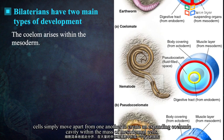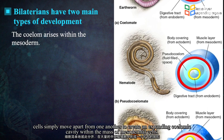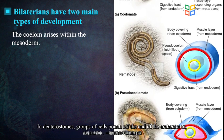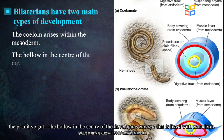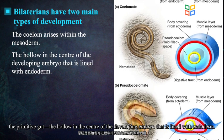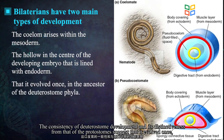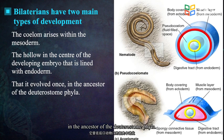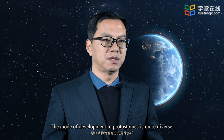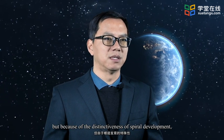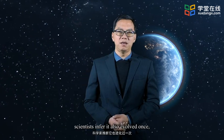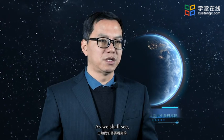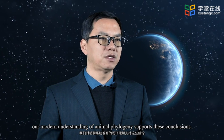In protostomes, cells simply move apart from one another to create an expanding coelom cavity within the mass of mesodermal cells. In deuterostomes, groups of cells pouch off the end of the archenteron — the primitive gut, the hollow in the center of the developing embryo lined with endoderm. The consistency of deuterostome development and its distinctiveness from that of protostomes suggest that it evolved once, in the ancestor of the deuterostome phyla. The mode of development in protostomes is more diverse, but because of the distinctiveness of spiral development, scientists infer it also evolved once in the common ancestor to all spiralian phyla. Our modern understanding of animal phylogeny supports these conclusions.